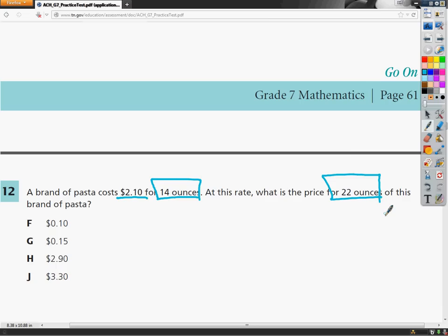So I'm going to look at the answer choices. Well, F says it's 10 cents. Well, 10 cents is a heck of a lot less than $2.10, so that's out. 15 cents is out. All I'm left with is $2.90 and $3.30.